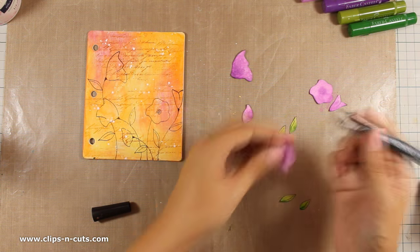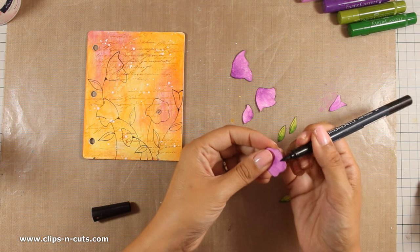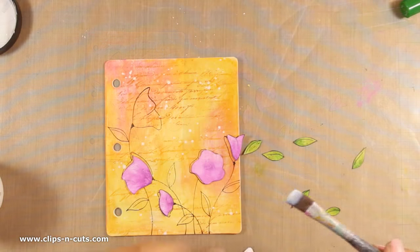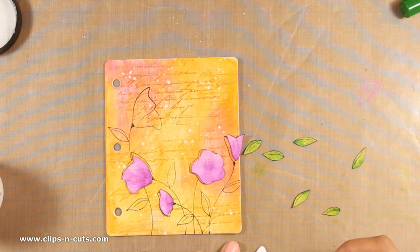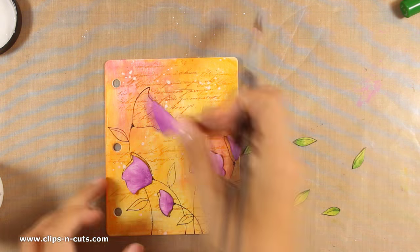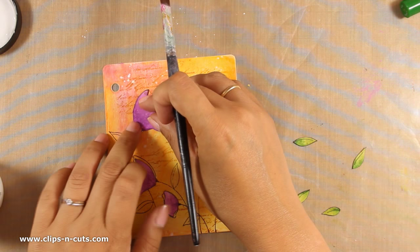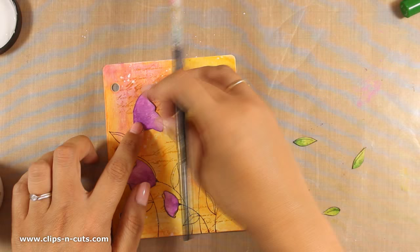This is going to create the illusion that I've cut out the flowers very perfectly, but at the same time I get rid of the white edges. Now I'm using my gel medium and I'm going to stick down both the flowers and the leaves.